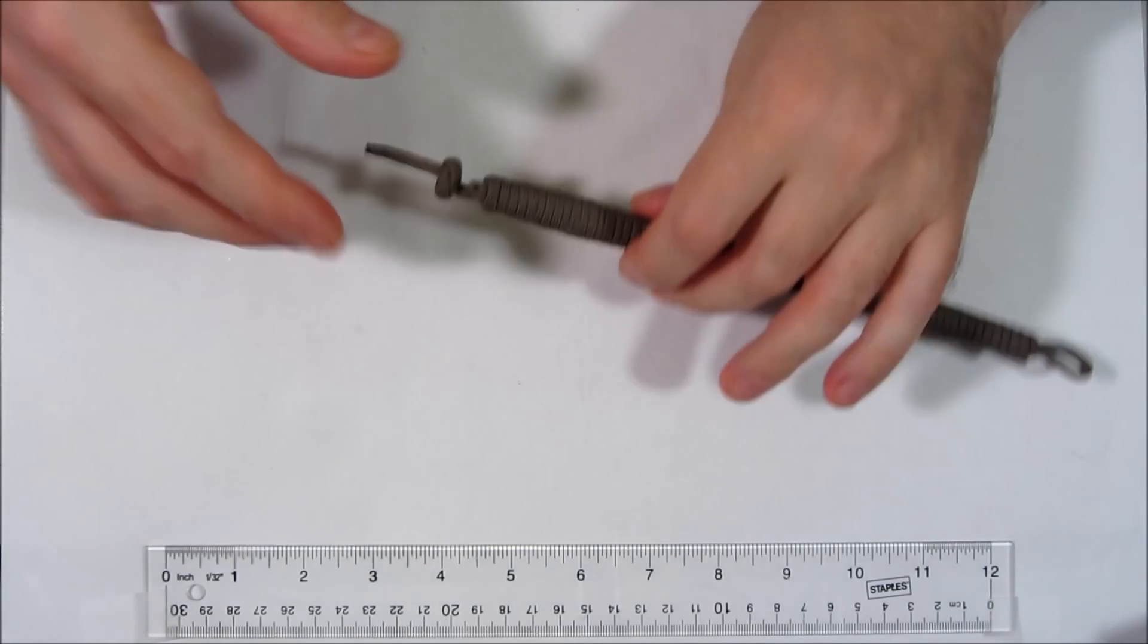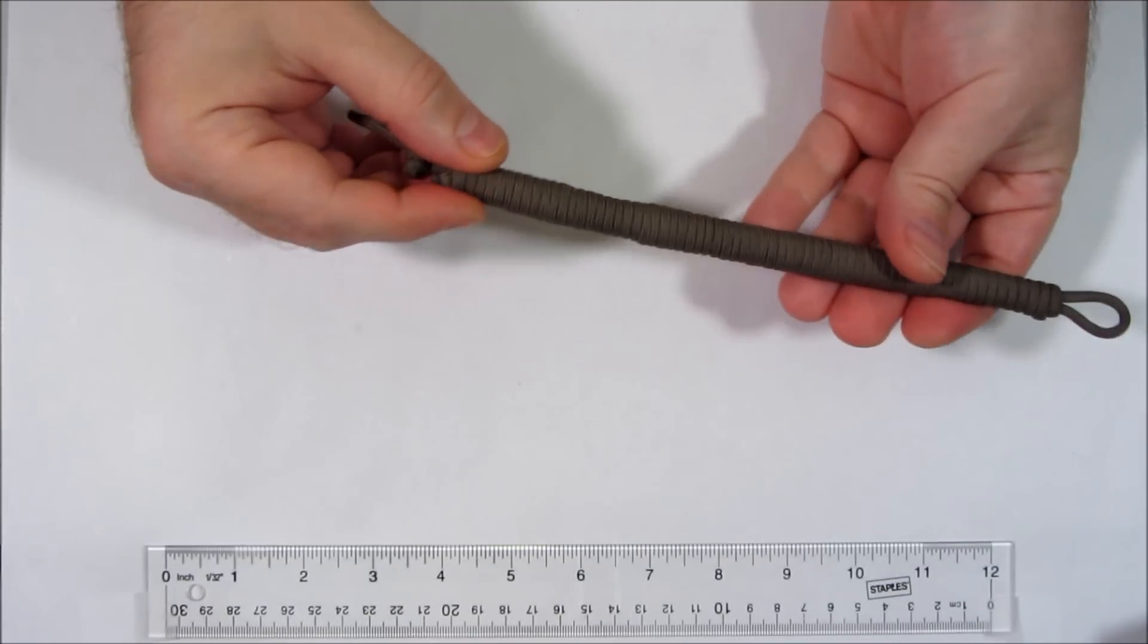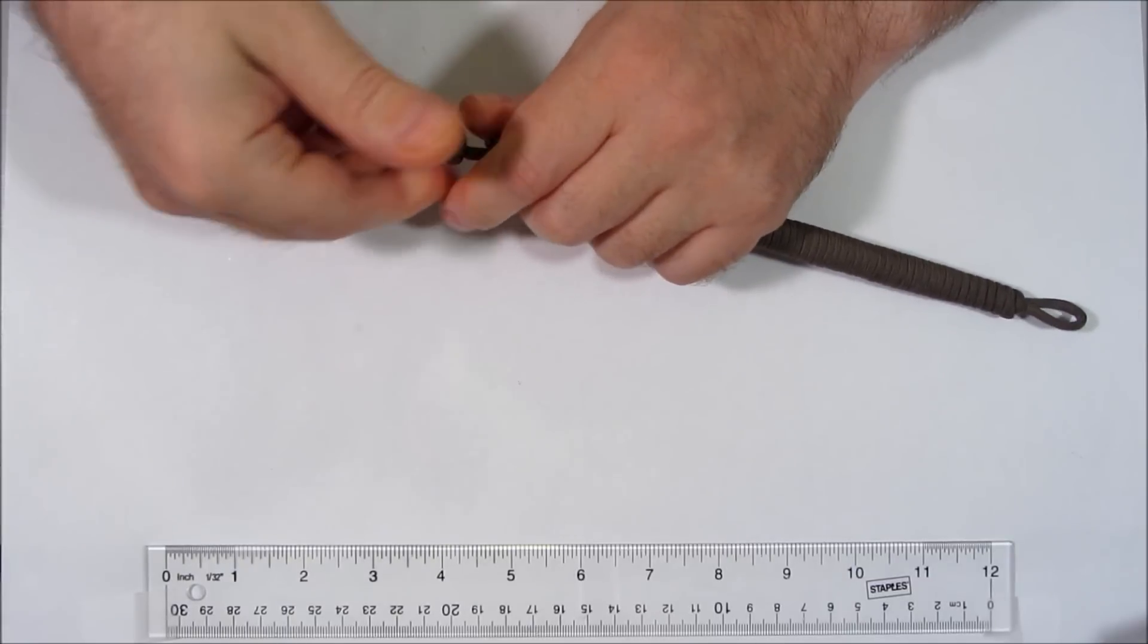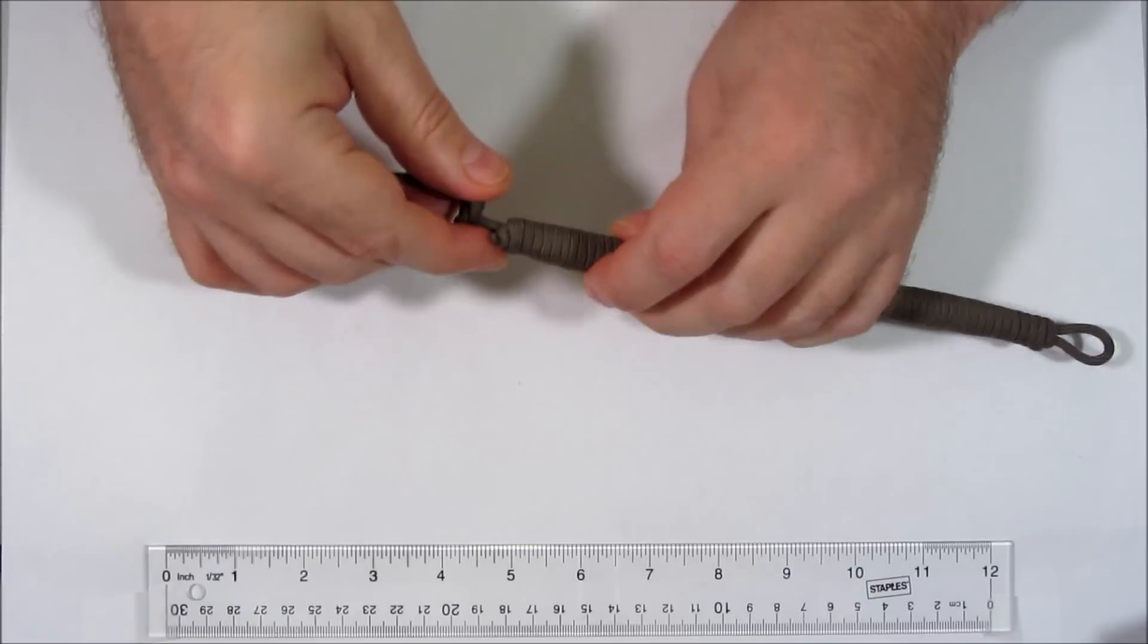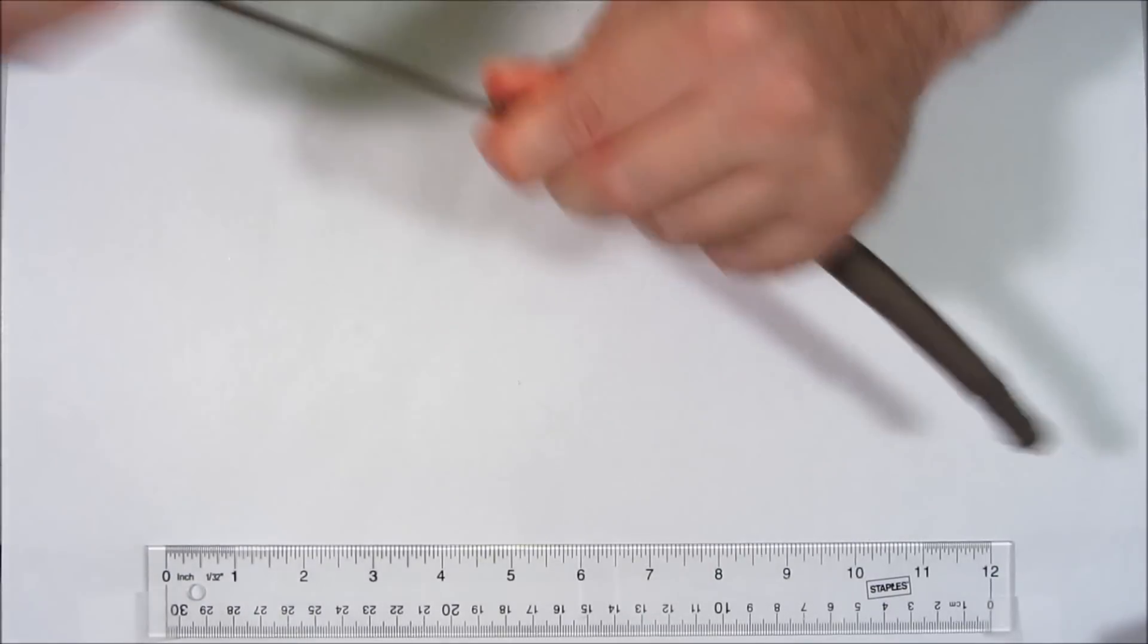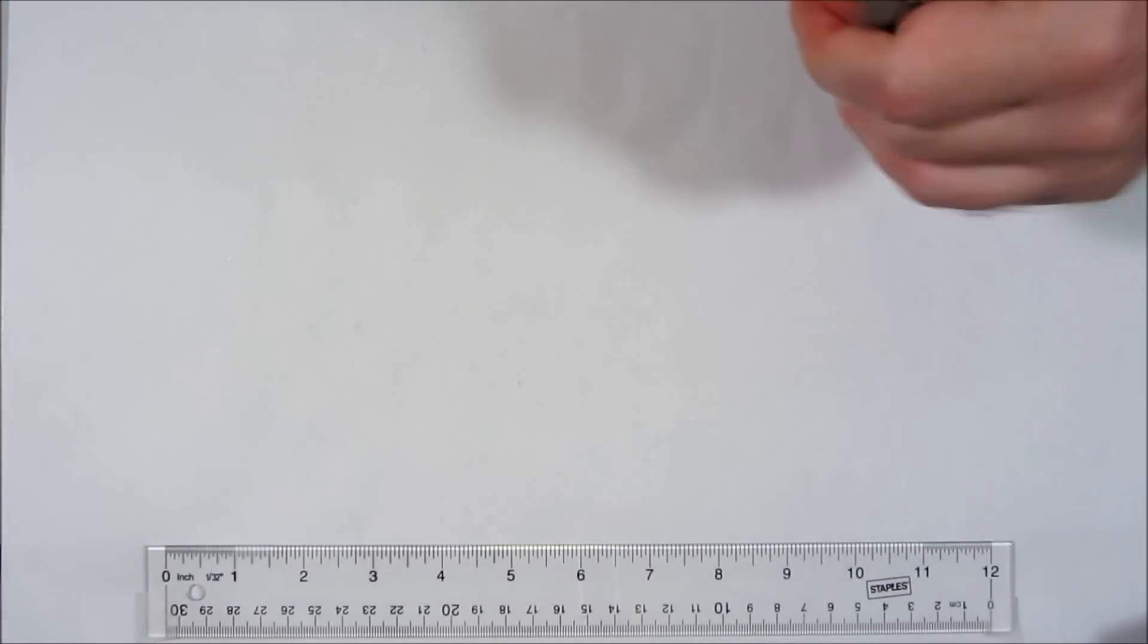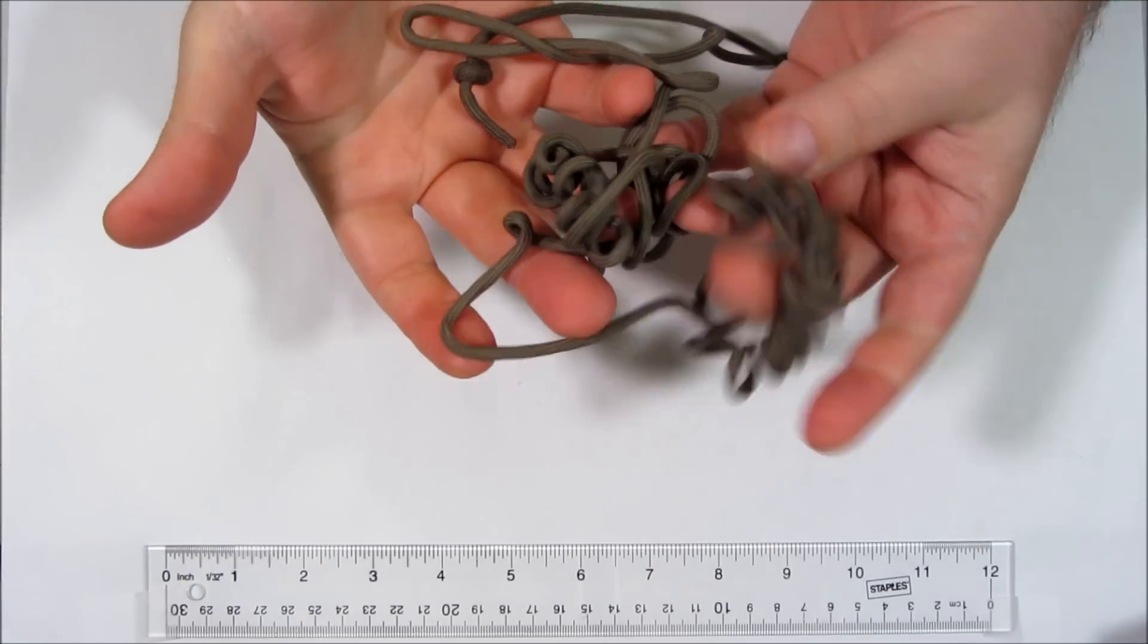Here's why I don't recommend deploying this in the traditional parafob method of just holding the bundle and pulling, and it's because the end result will be extremely twisted. Here's an example of it. Do you see how incredibly twisted this is?